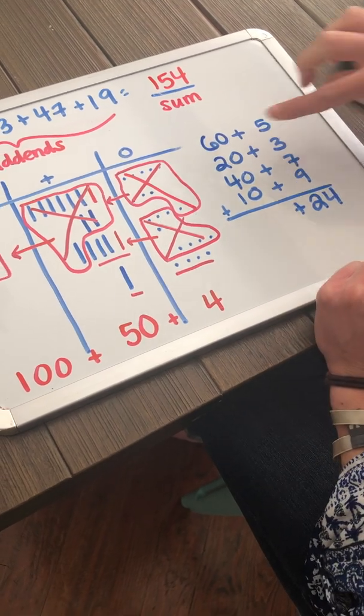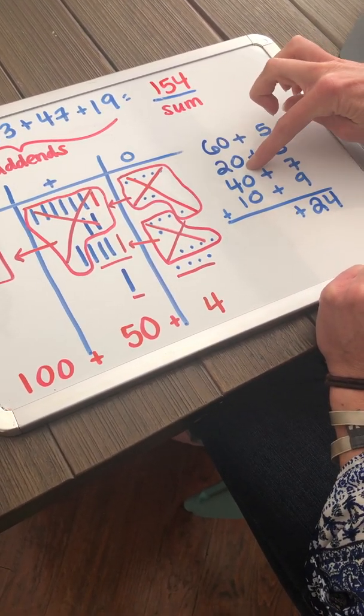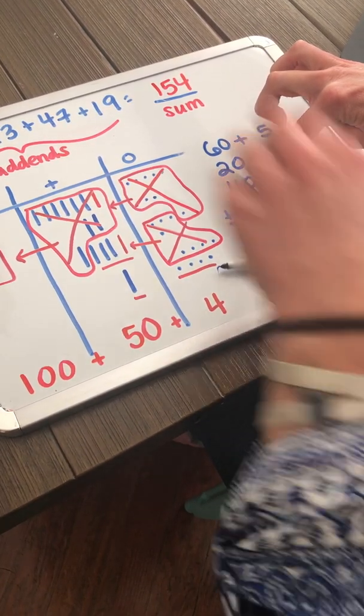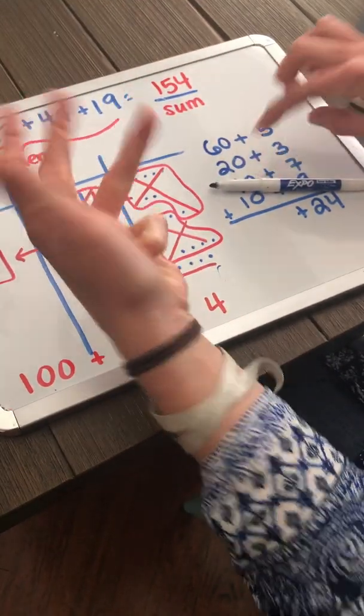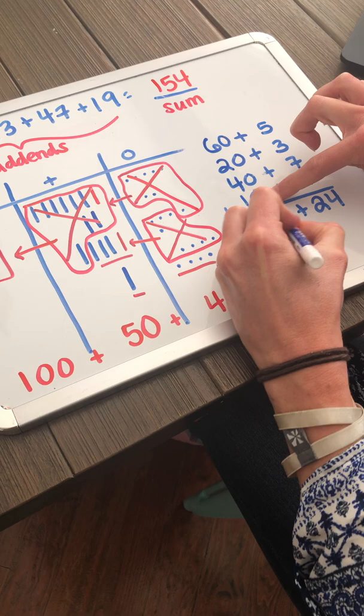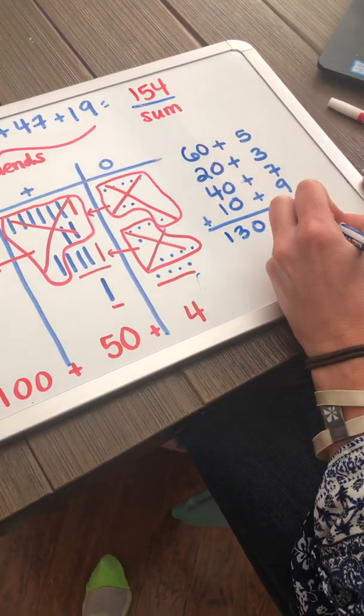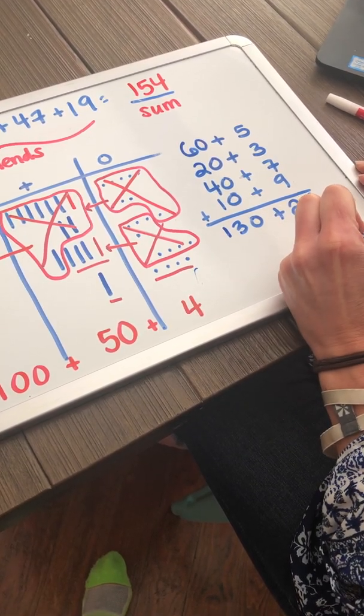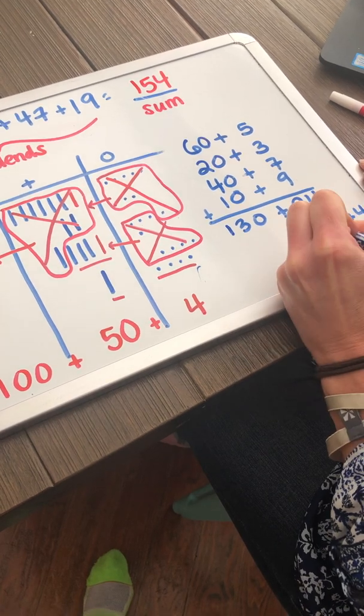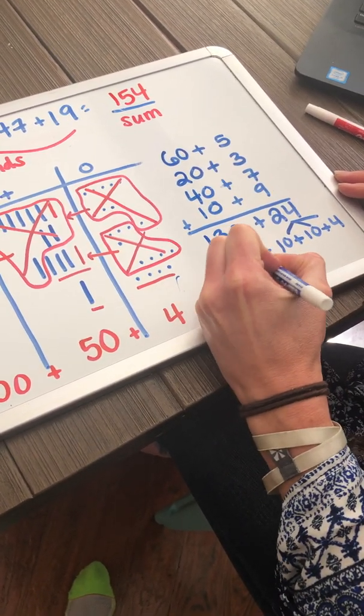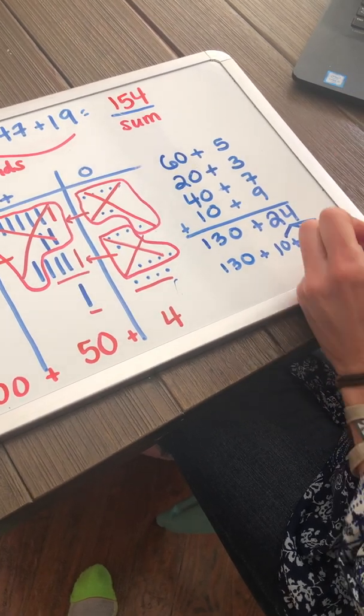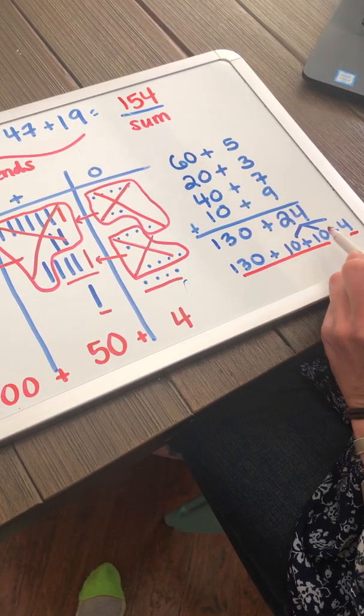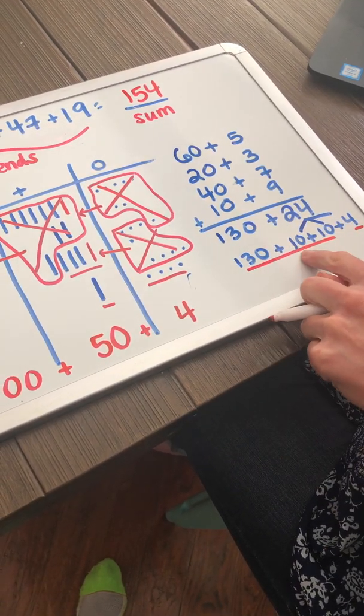Now, let's add together my tens. 60 plus 20 is 80. 80 plus 40, 90, 100, 110, 120, and then 10 more is 130. And now, I've got to break it apart to solve it. So, I can break 24 into 10 plus 10 plus 4. So, I have four ones. Now, let's combine our tens together. 130 plus 10 plus 10 is 140, 150. So, I now have 150 plus 4.